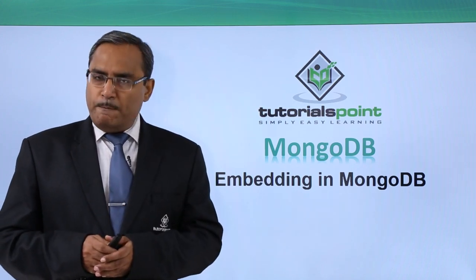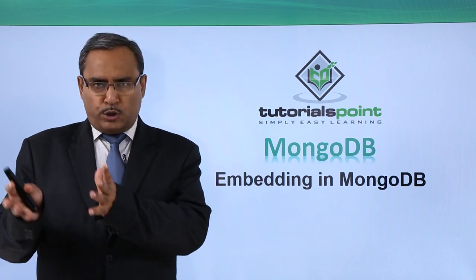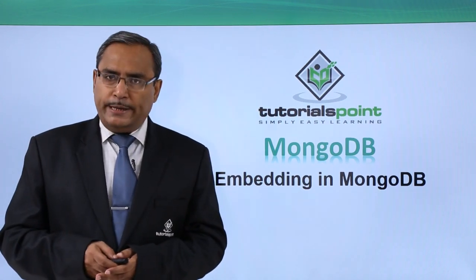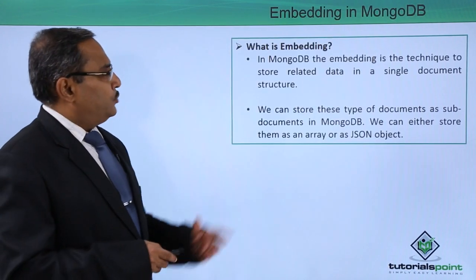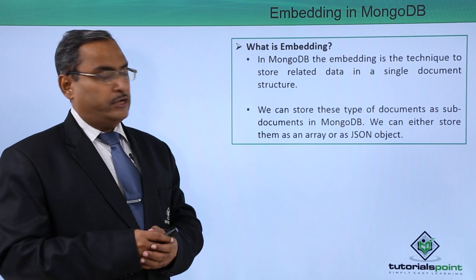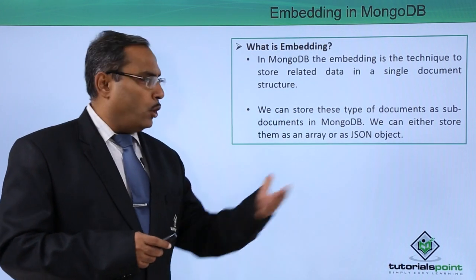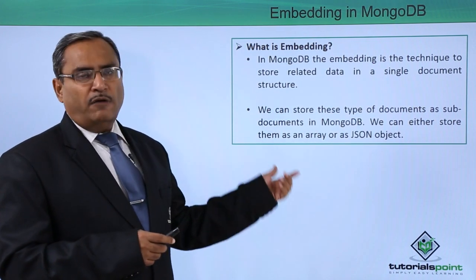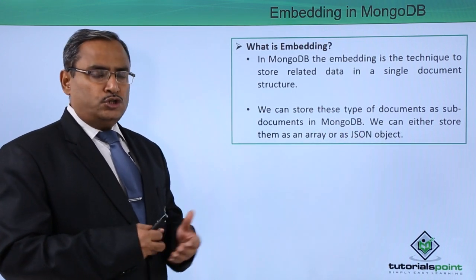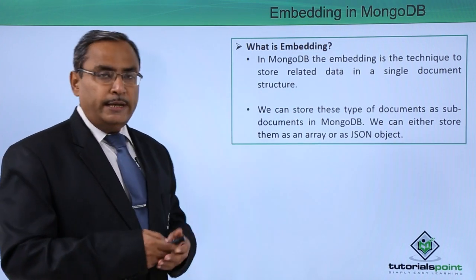In this video, we are discussing embedding in MongoDB. Sometimes it may happen that one document is put as a sub-document inside another document — that is the concept of embedding in MongoDB. In MongoDB, embedding is a technique to store related data in a single document structure. You can store these types of documents as sub-documents, either in the form of a JSON array or a JSON object. So one document will be embedded in another document, and that is known as embedding in MongoDB.